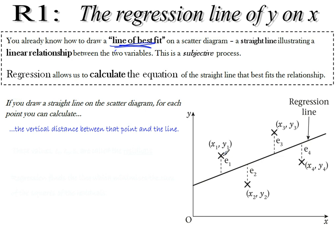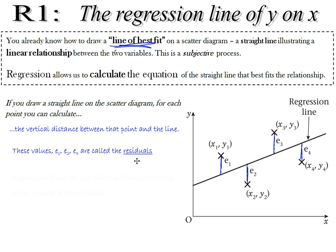We're talking about all these vertical distances. If we work out all of those distances and square them — it's important to square them because the ones below the line will have a negative distance and the ones above will have a positive distance — and add it all up, the regression line is the line which will have the smallest total. These differences are called the residuals.